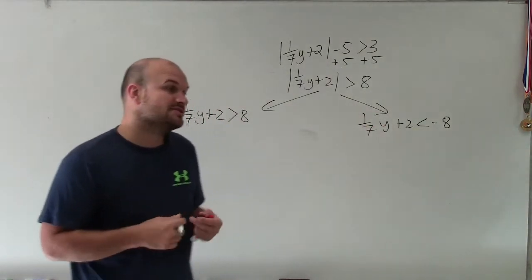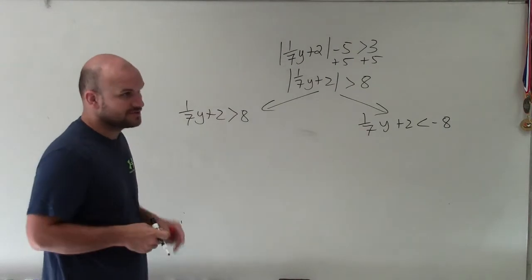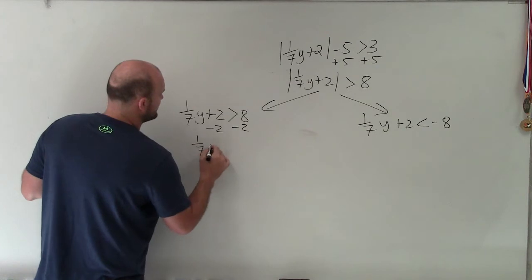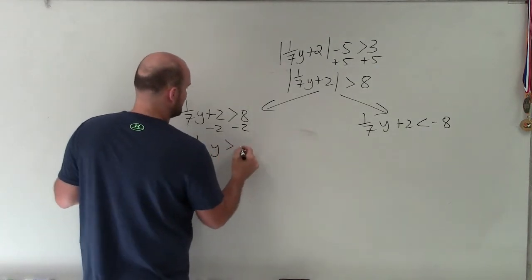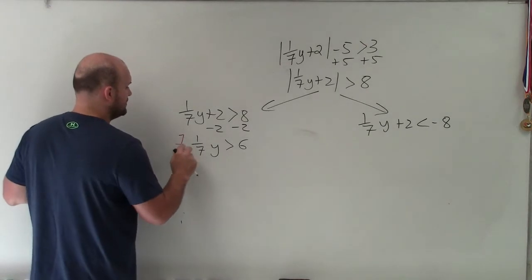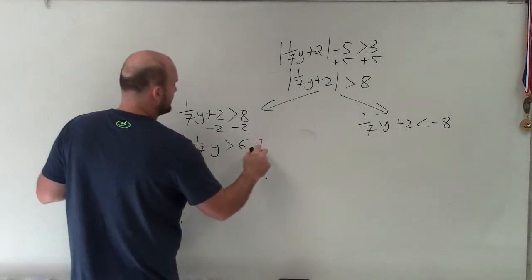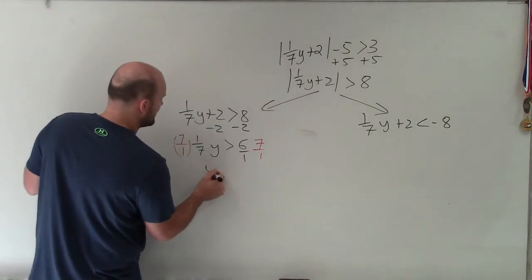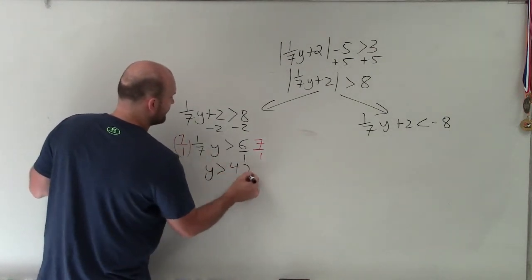So now I can go ahead and solve and then graph my solutions. In doing that, I'm just going to subtract 2. And I have 1 7th y is greater than 6. Now, to get rid of my fraction, I'll multiply by the reciprocal. So I'll multiply by 7 over 1. This will be 6 over 1. And when I multiply, it's y is greater than 42.